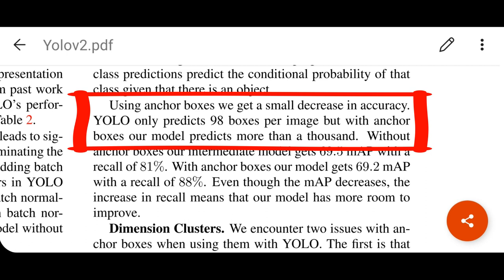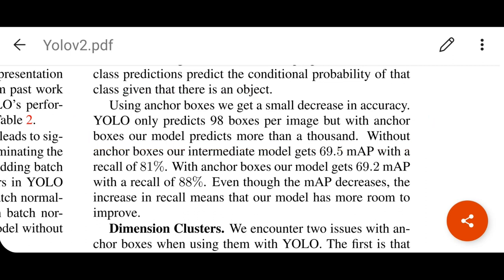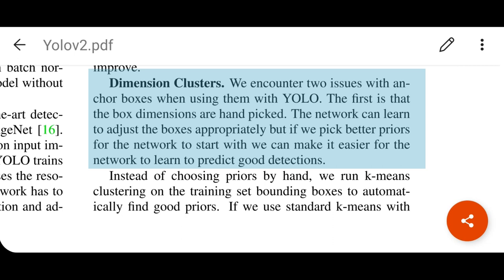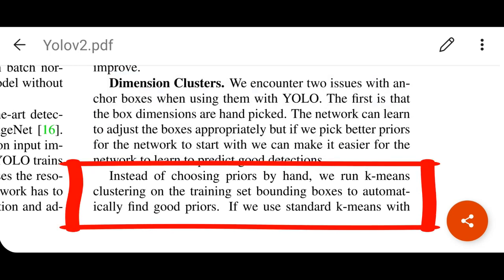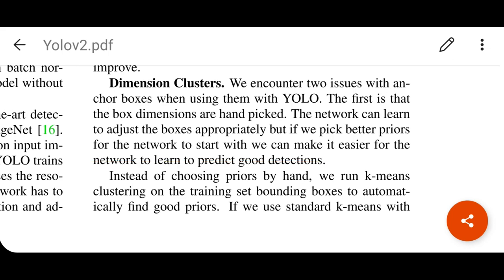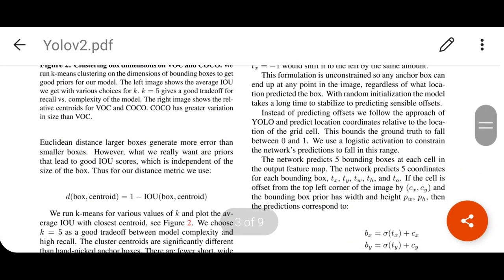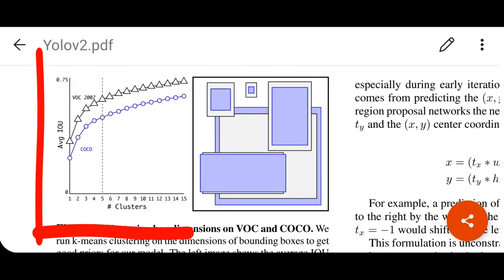With anchor boxes, the model predicts more than 1000 boxes. The authors describe dimension clusters to address two issues with anchor boxes. The first issue is that box dimensions are hand-picked in YOLO version 1. Instead, they run k-means clustering on the training set bounding boxes to automatically find good anchor sizes. They did not use standard k-means — they used a different custom distance function to determine the optimal number and size of anchor clusters.